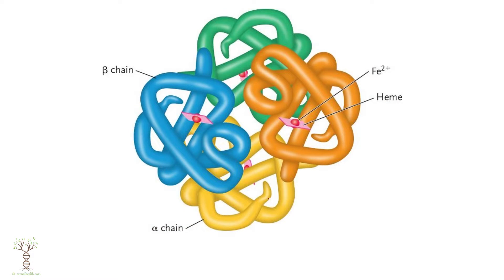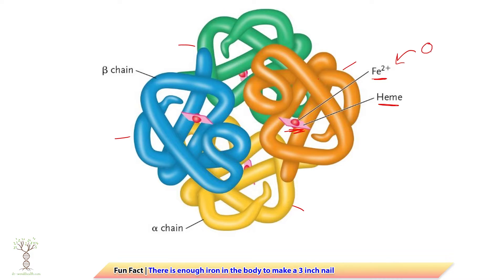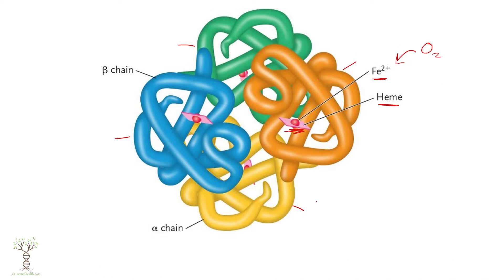Now, how do we transport oxygen and carbon dioxide throughout the blood? We have red blood cells, which contain molecules called hemoglobin. Hemoglobin is composed of four different proteins, and inside each hemoglobin protein there is a molecule called heme, which contains an iron molecule (Fe2+). This is what oxygen binds to, so each hemoglobin molecule can bind one oxygen on each heme molecule.